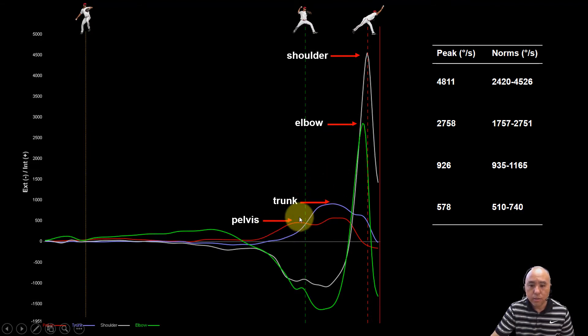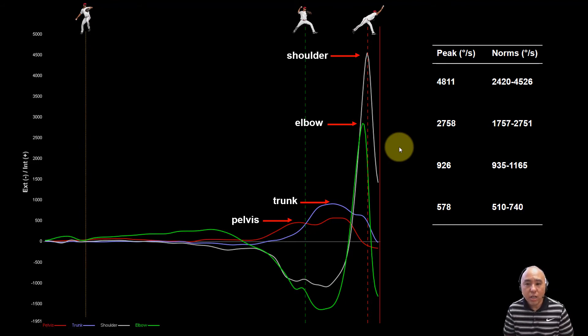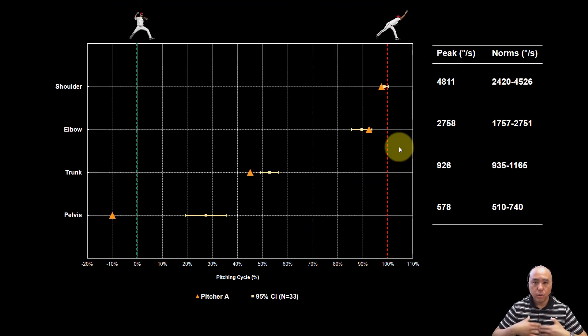Look at the sequence. The sequence goes in a proximal to distal fashion. The only caveat for baseball pitching is that elbow extension angular velocity actually peaks just before the shoulder peaks in internal rotation. And what we believe is happening is that as the shoulder is internally rotating into ball release, the momentum that's generated from that motion itself passively extends the elbow.